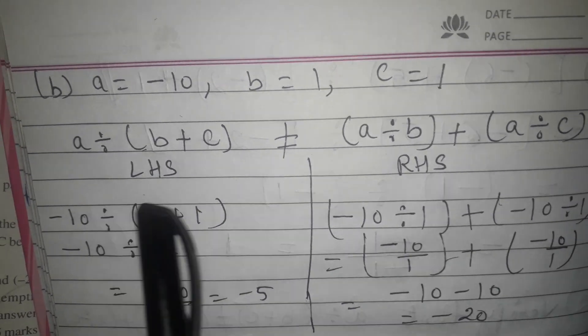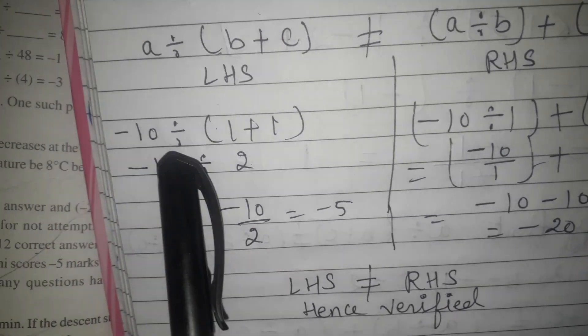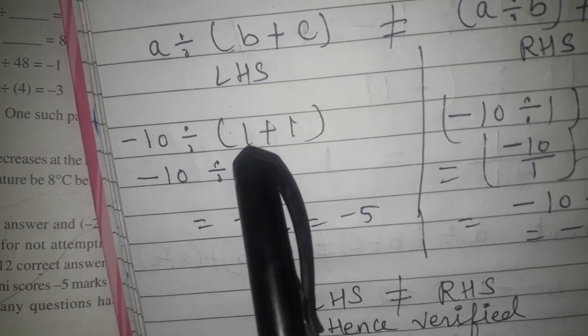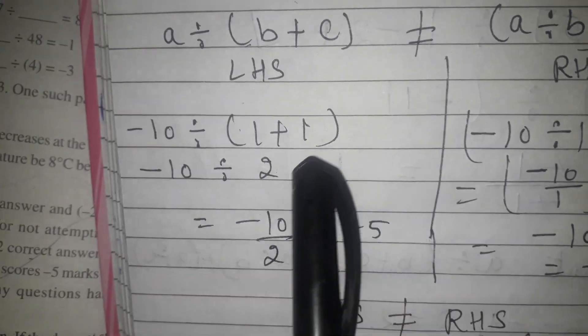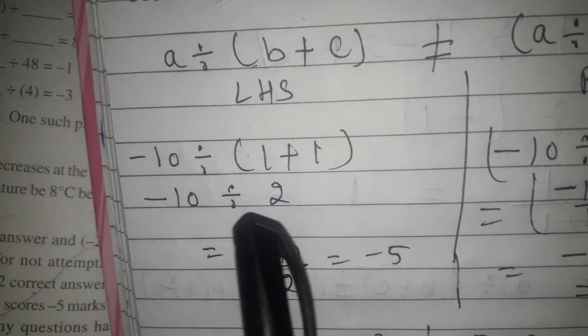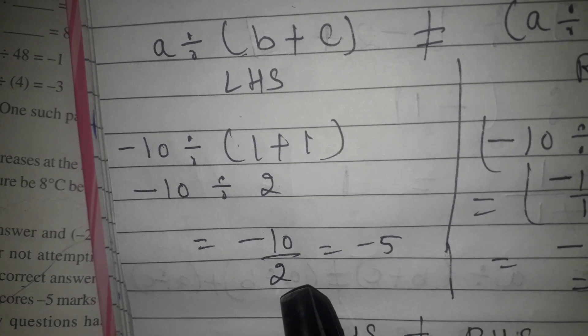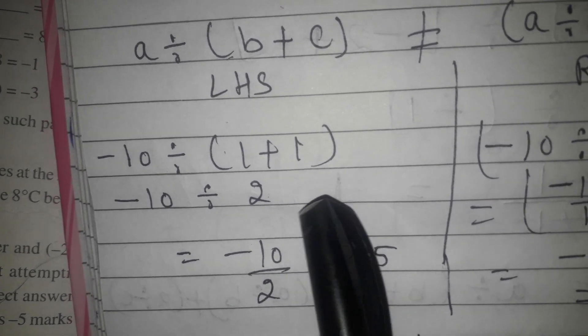First, I will solve LHS. Minus 10 is divided by B means 1, C means 1. B plus C means 1 plus 1, it will become 2. Minus 10 is divided by 2, minus 10 upon 2. I will cut: 2 ones are 2, 2 fives are 10. Minus 5 is value of LHS.